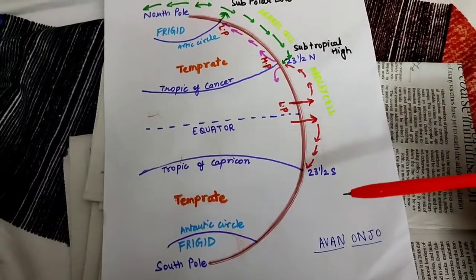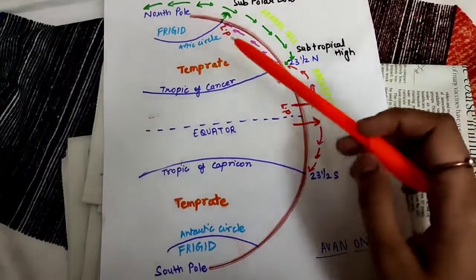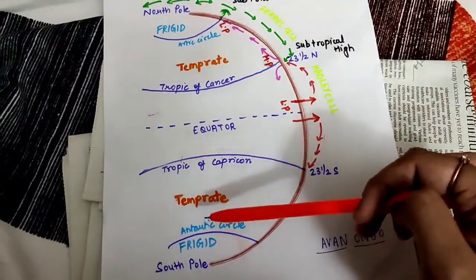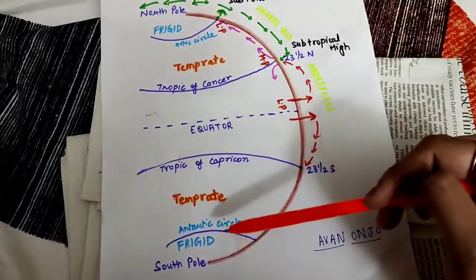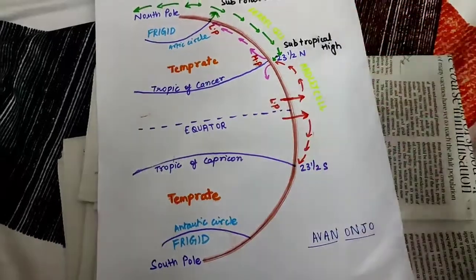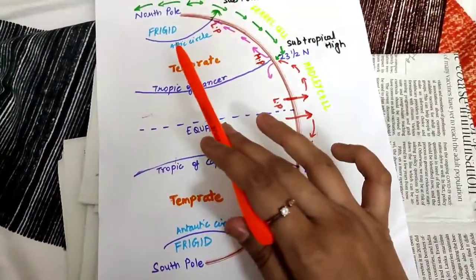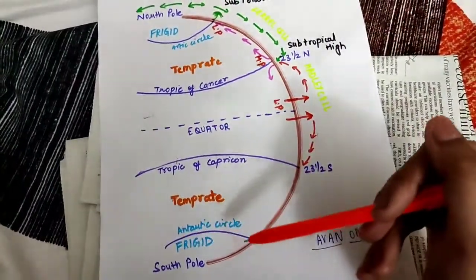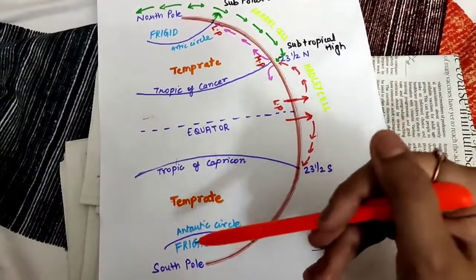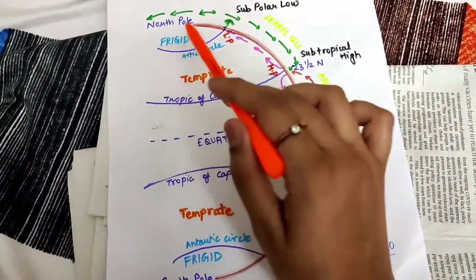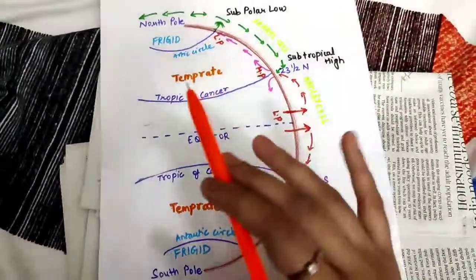Then we have the temperate zones, and finally towards the poles we have the frigid zones. This is Arctic Circle and this is Antarctic Circle. Here we have the South Pole and here we have the North Pole. So this is the basic representation of various zones of Earth.